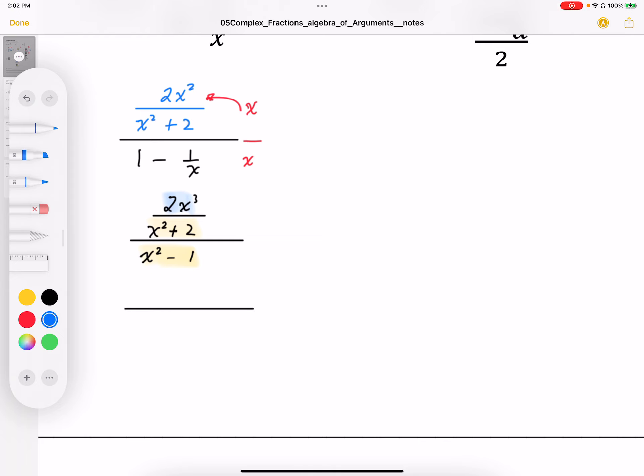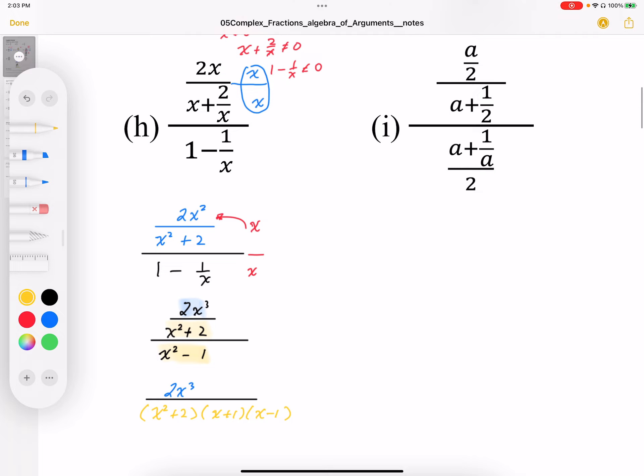I end up with 2x cubed in the numerator. In the denominator, I'm going to end up with x squared plus 2. And I'm also going to end up with x squared minus 1, which I'm going to write as x plus 1, x minus 1. And so this is my factored form of this expression. And I only have one numerator, one denominator when I start off with this more complicated expression.